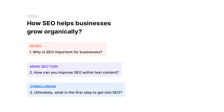First, what's the intro? Why is SEO important for businesses? The main part: how can you improve your SEO within text content? You can even divide this main part into further sections. And in the conclusion: what is the first step to get into search engine optimization? Being specific about the information you are providing always pays off. Your reader will be more likely to understand your message and be drawn to your services, products, or even your communication style.